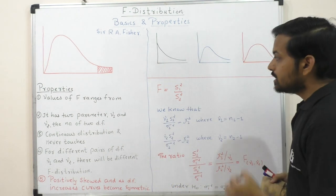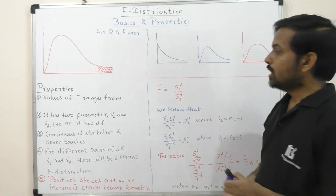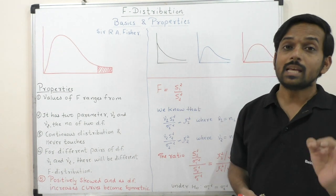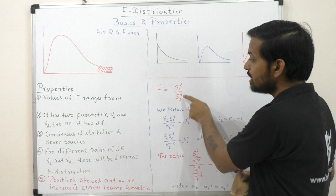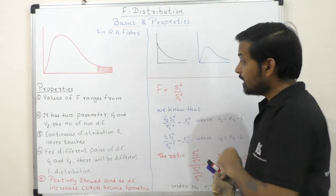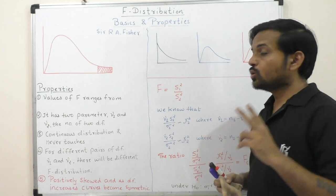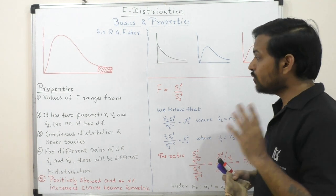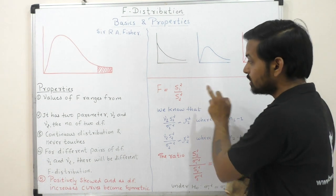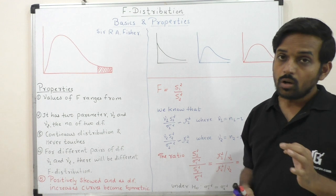Here you see the simple F test and F statistic formula: F equals s1 squared divided by s2 squared, where s1 squared and s2 squared are the variances of sample 1 and sample 2. We have two different population samples. The two population variances are sigma 1 squared and sigma 2 squared, sample variances are s1 squared and s2 squared, and sample sizes are n1 and n2.